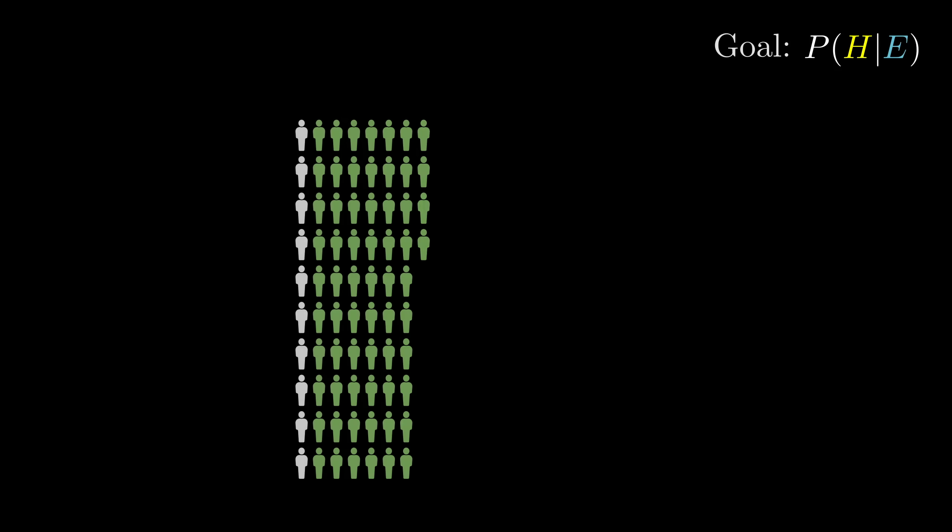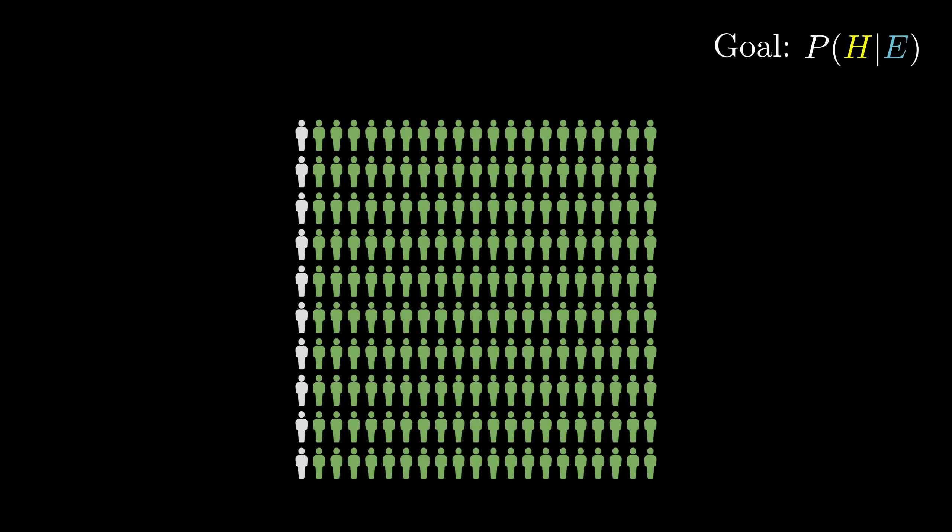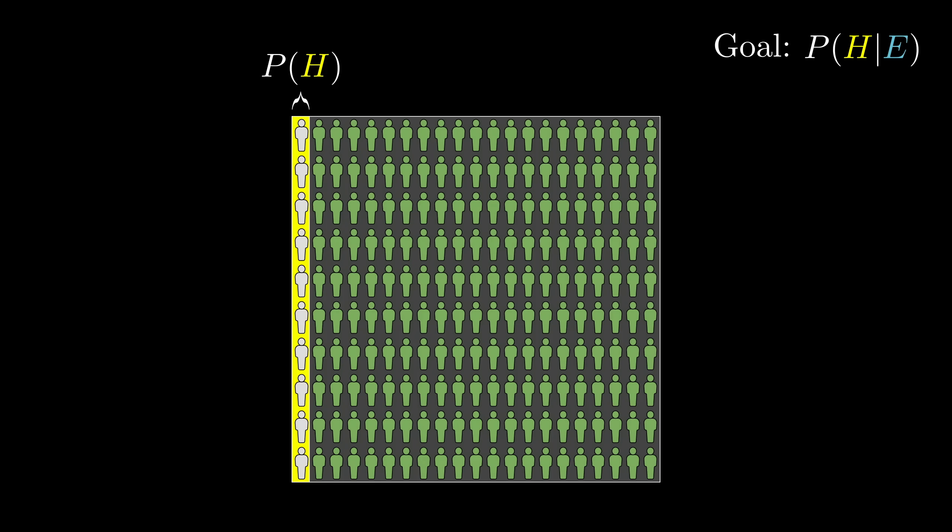Now remember the first relevant number we used. It was the probability that the hypothesis holds before considering any of that new evidence. In our example, that was 1 out of 21, and it came from considering the ratio of librarians to farmers in the general population. This number is known as the prior.